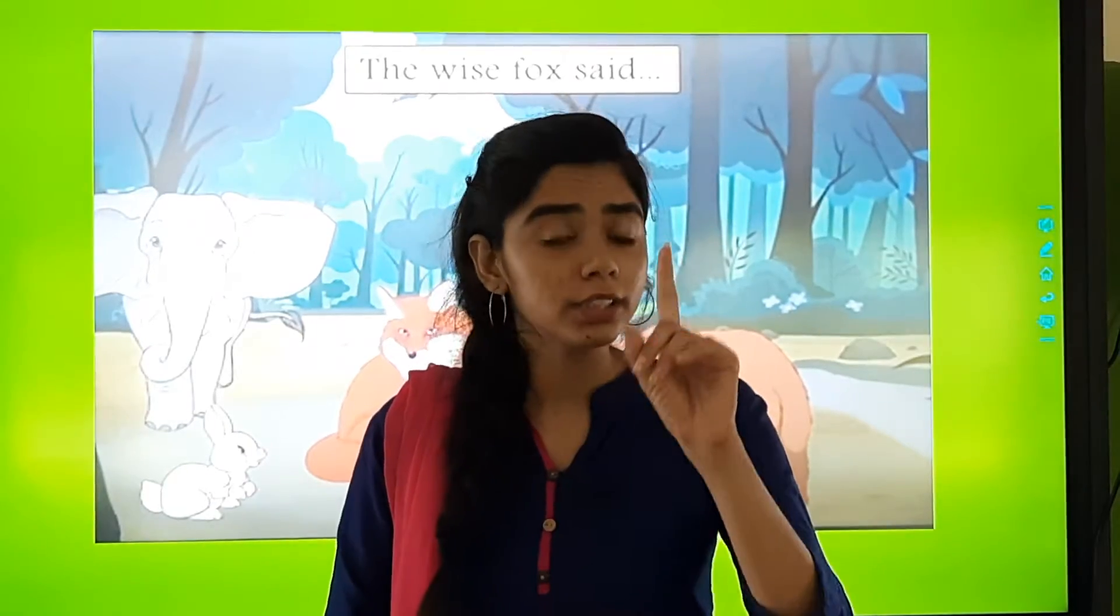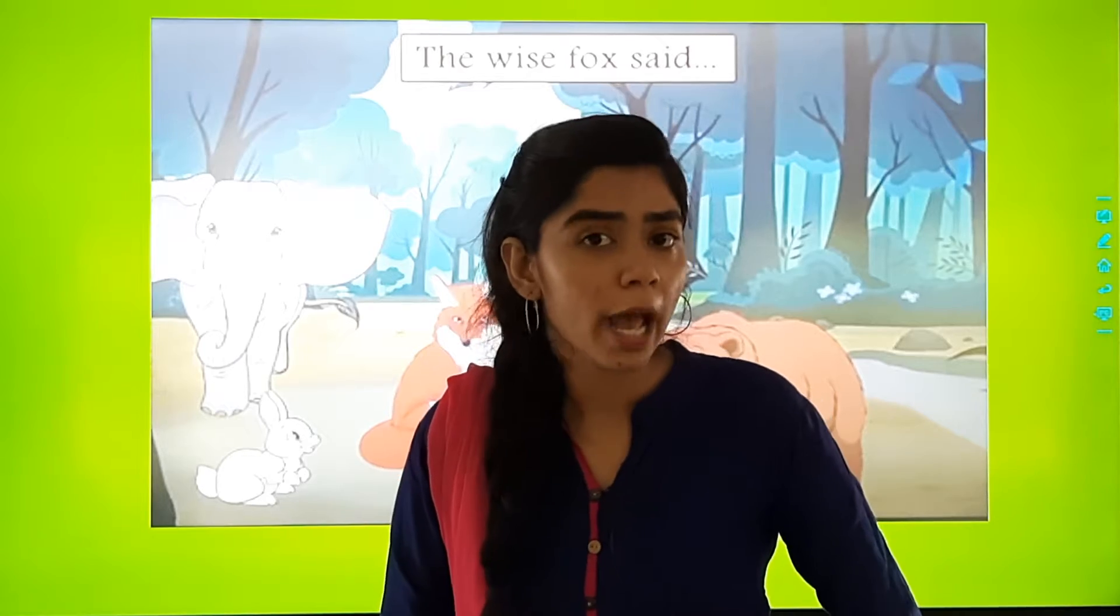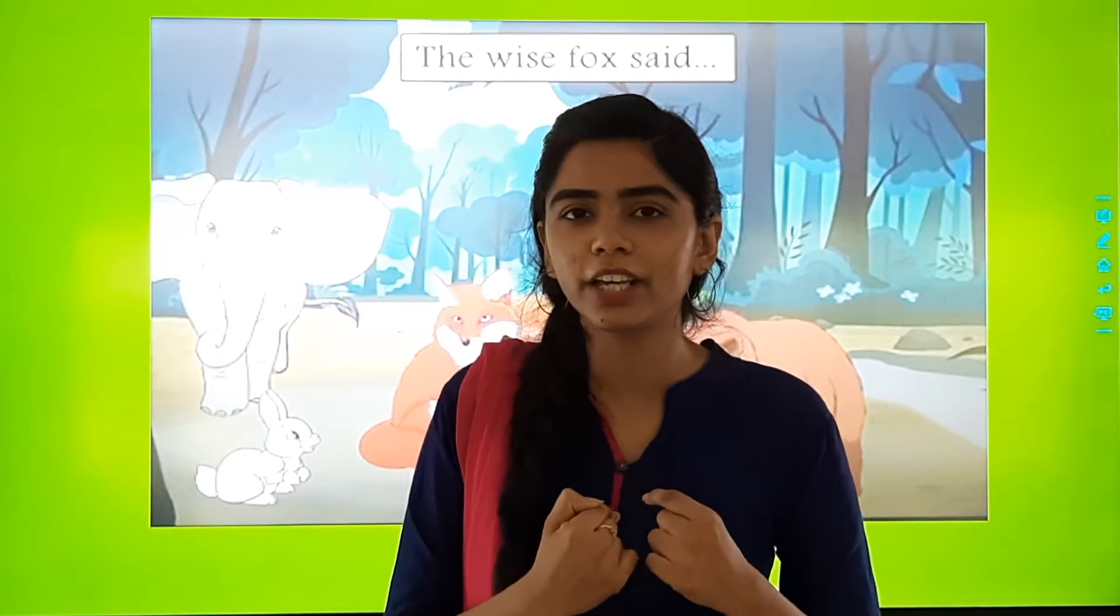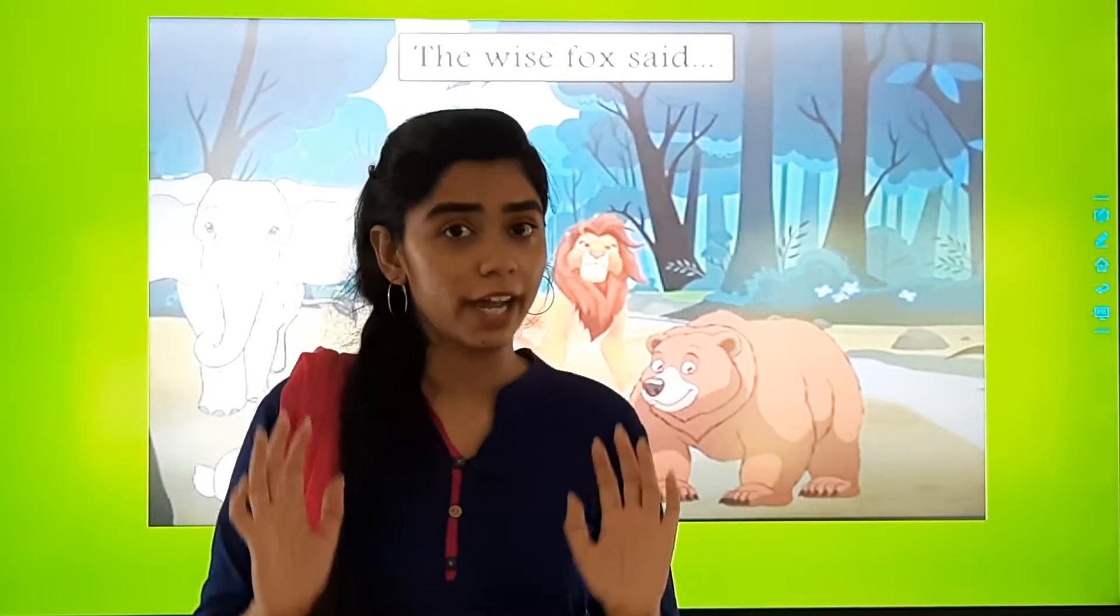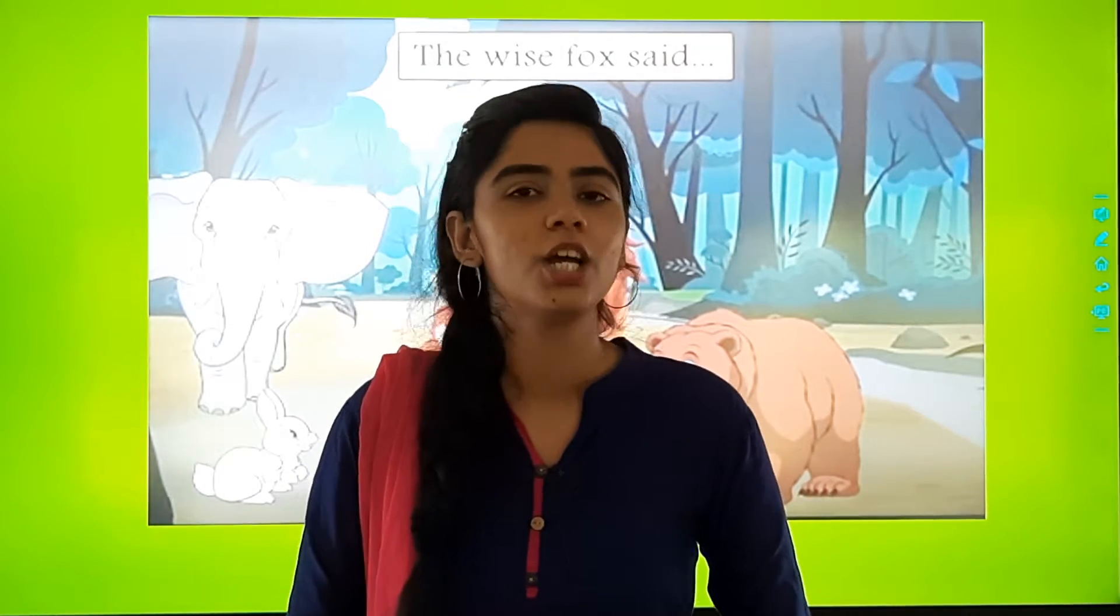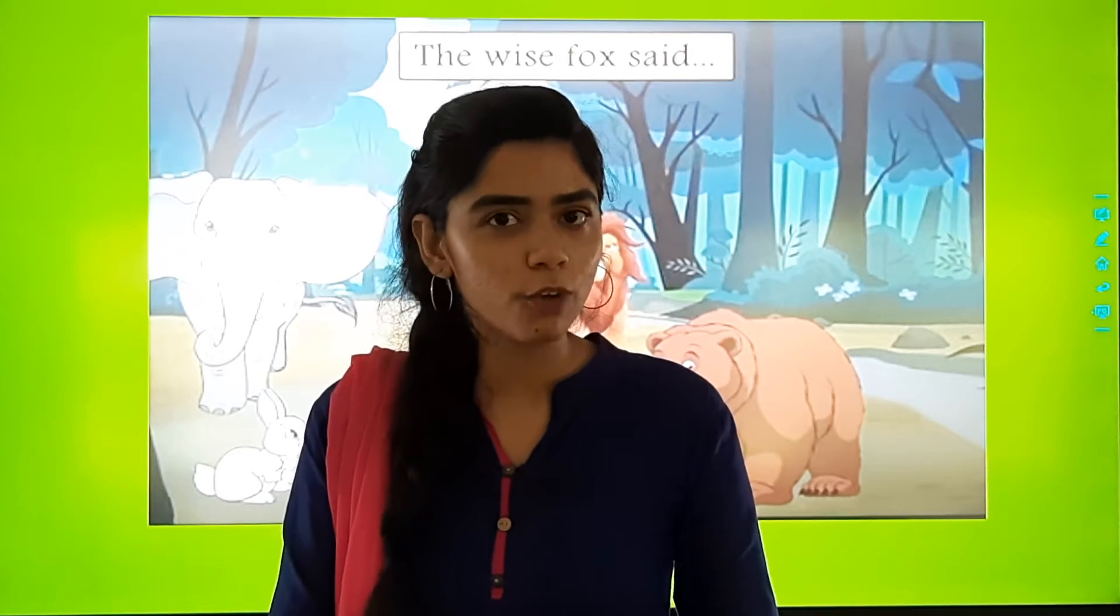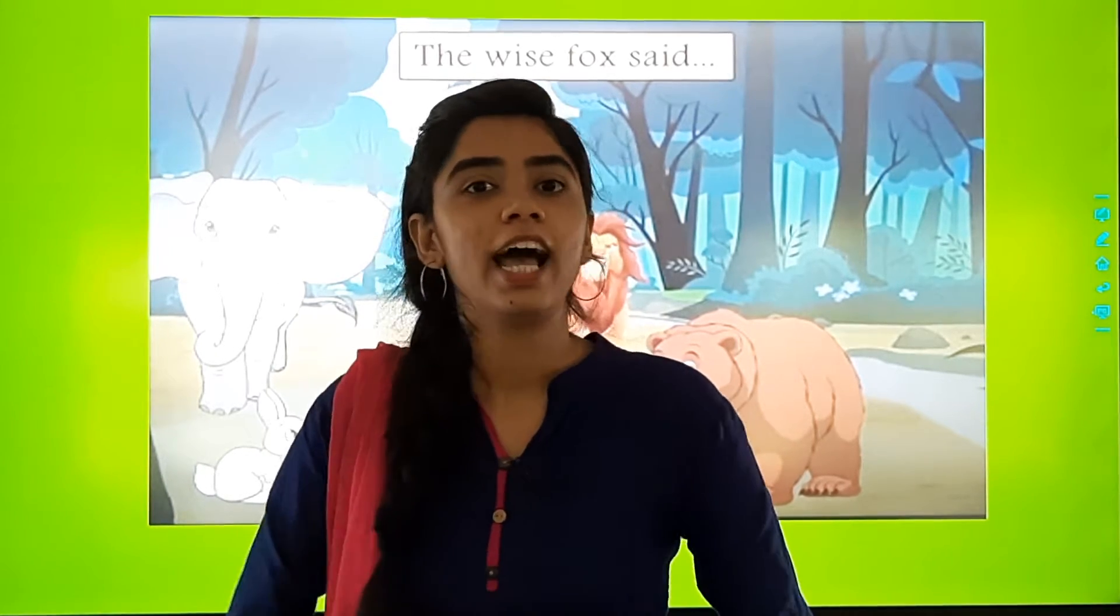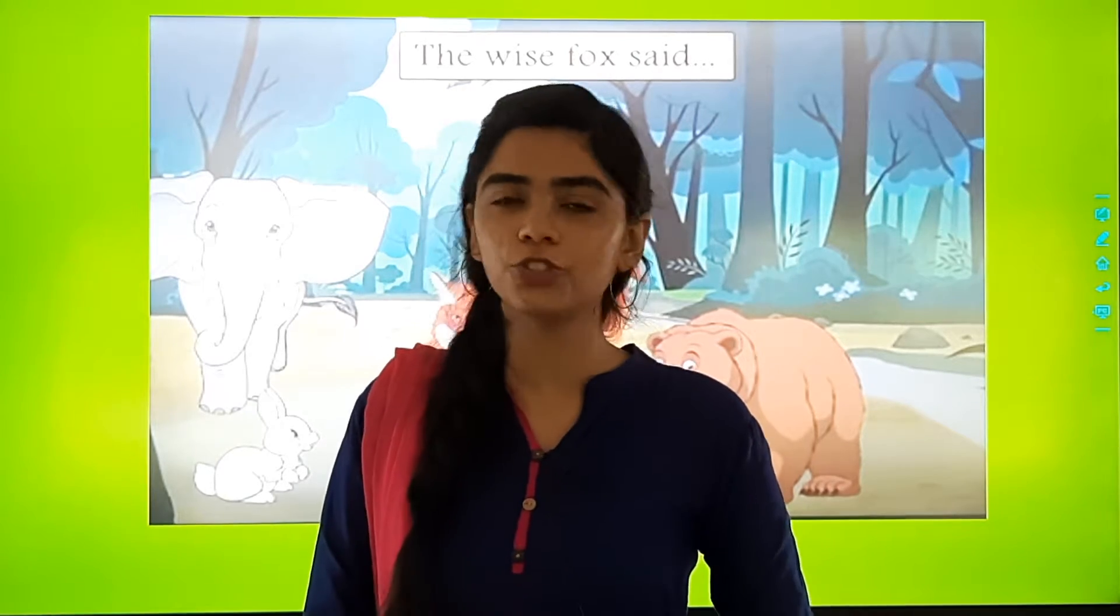Once there was a huge jungle and in that jungle there lived many animals. One day they all were discussing who should be the king of the jungle. They all started fighting, saying I want to be the king of the jungle. Then the wise fox came ahead and said, we can't decide who will be the king of the jungle. For that, let us keep a competition. Every animal who wants to be the king of the jungle will come forward and describe itself. They will describe their qualities as to why they should be the king of the jungle.